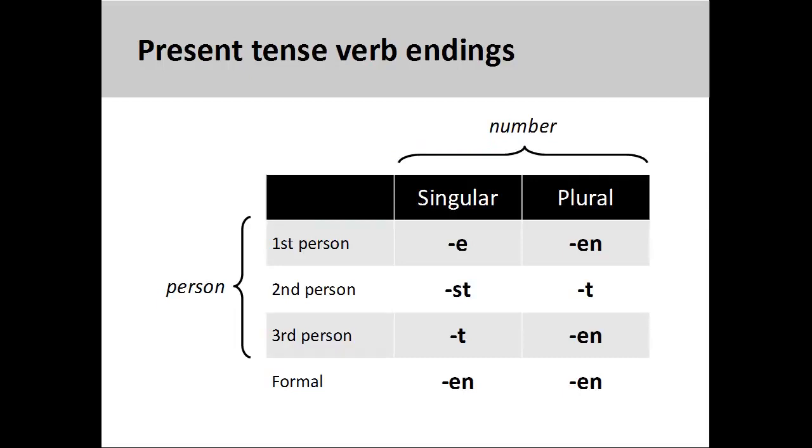The term present tense simply means that the action of the verb occurs in the present moment and not, say, in the past. You will use this conjugation pattern most frequently in German. As you see on the screen, German has a verb ending for each combination of number and person. It is very important to memorize these endings.